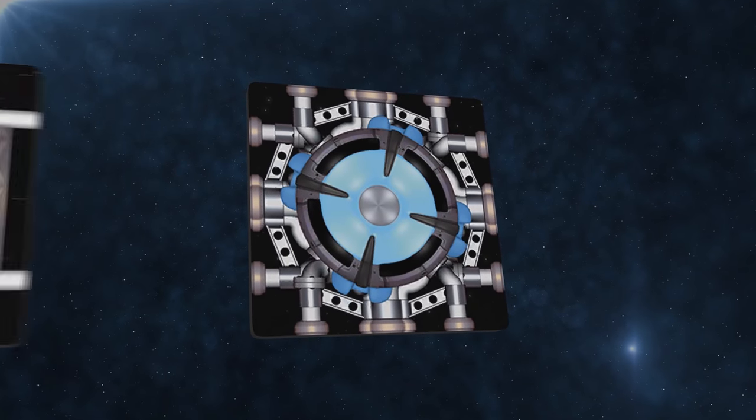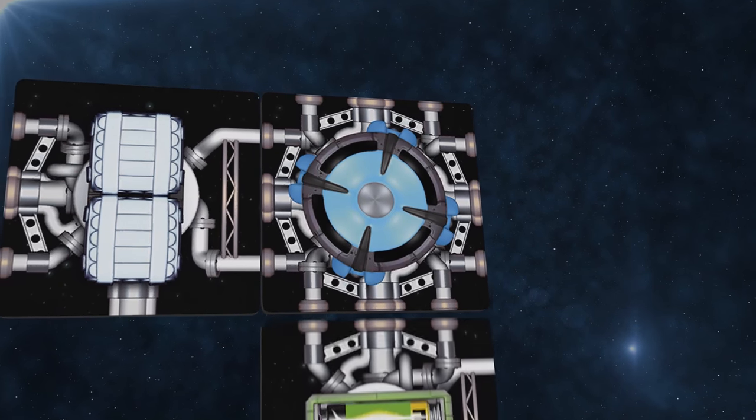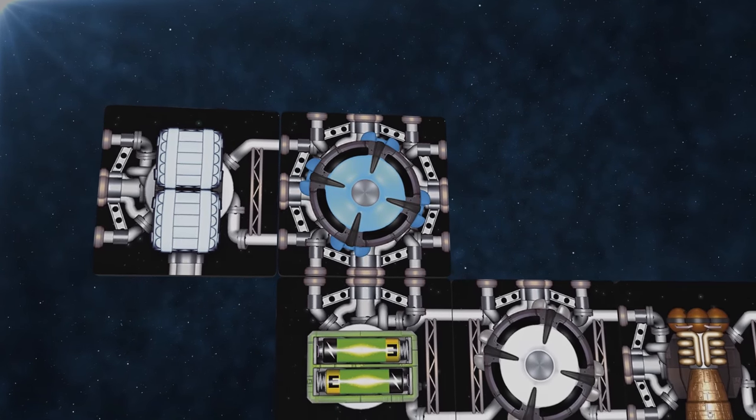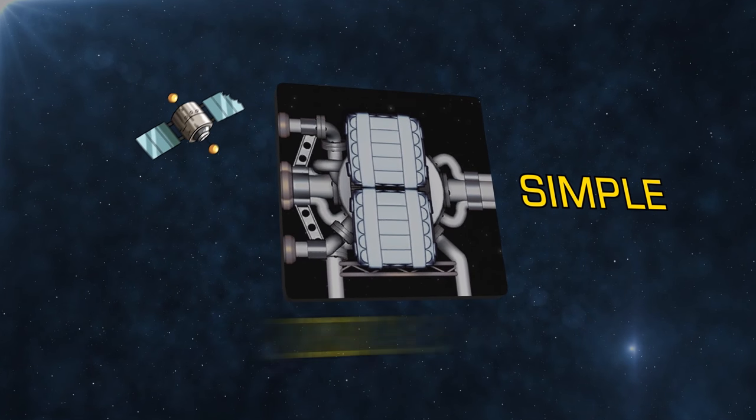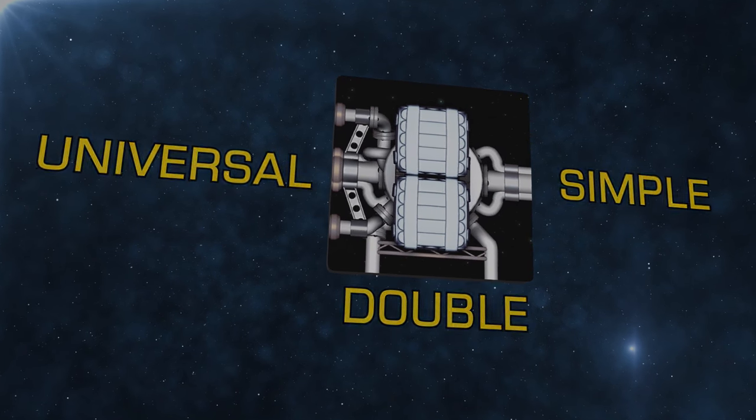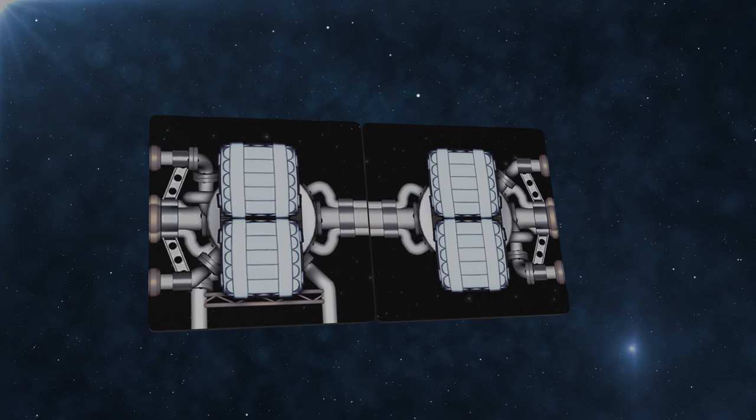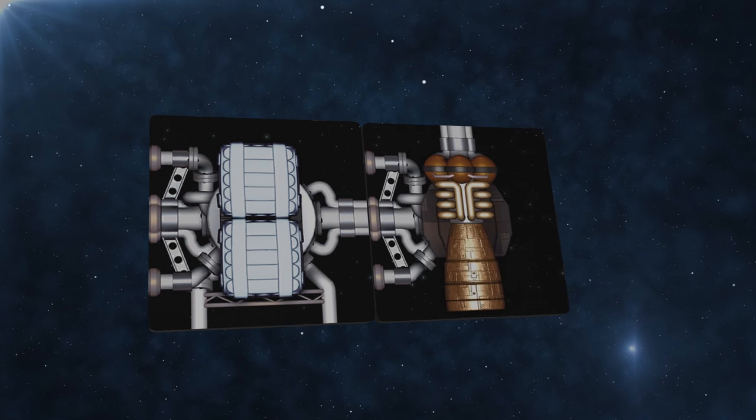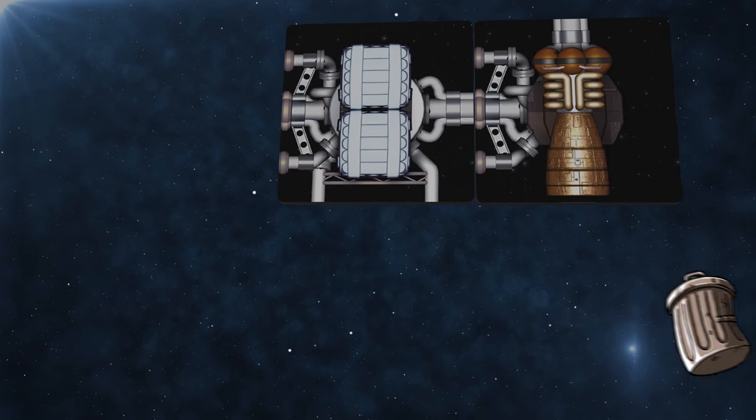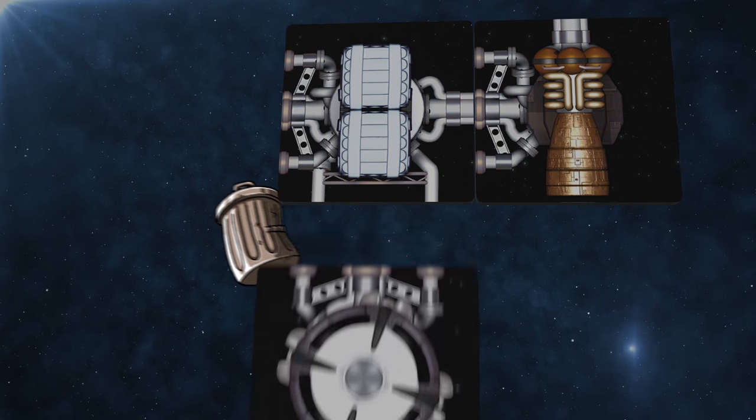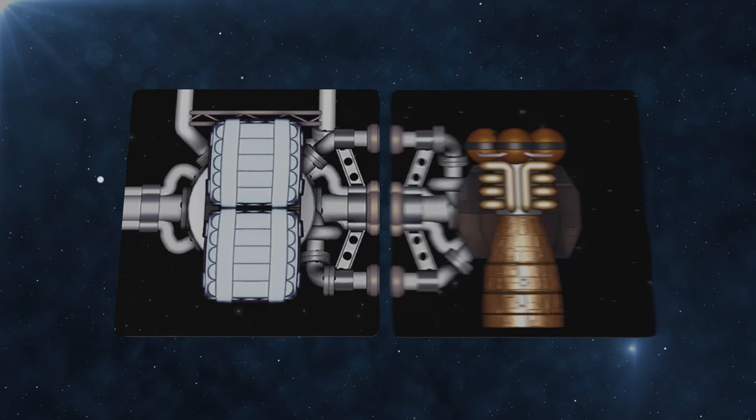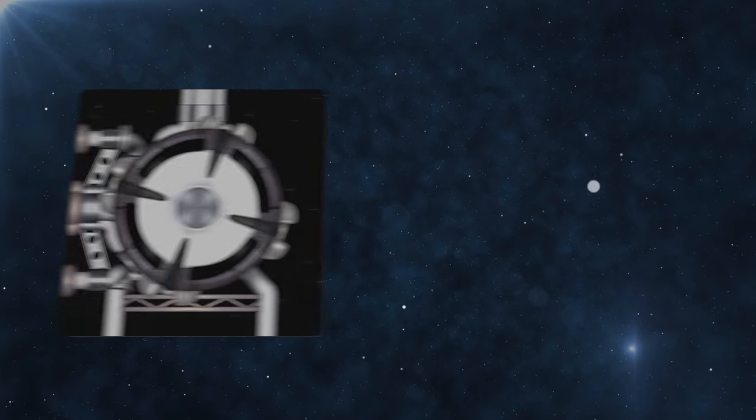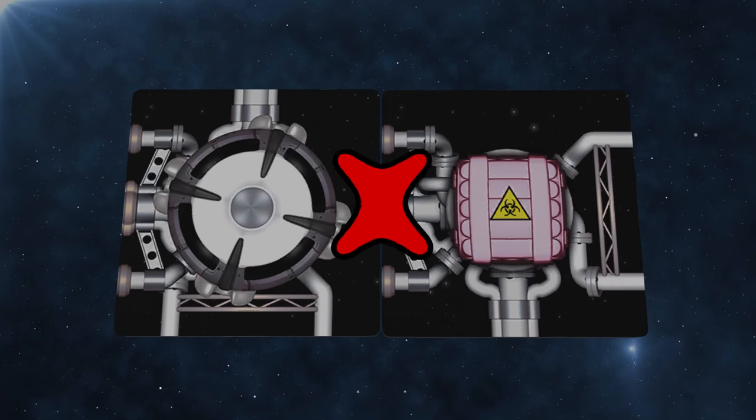Each time you add a new component to your ship it must be attached to one of your existing components. To join two components together you must match the connectors. There are simple connectors, double connectors and universal connectors. A simple connector can only join to another simple connector or to a universal connector. And a double connector can only join to another double connector or a universal connector. Basically you cannot join a simple connector to a double connector. Two universal connectors can be joined together. Also a side without any connectors cannot join to a side which has a connector.